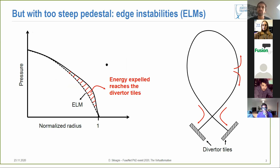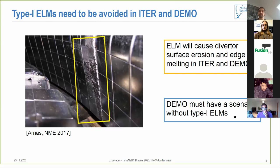However when you have too steep pedestal gradients you can have some edge instabilities called edge localized modes, ELMs in short, that decrease your profile shape. Then you have this energy which is expelled into the scrape-off layer and reaches your divertor targets enhancing the heat fluxes, and this is something that needs to be avoided in ITER and DEMO.